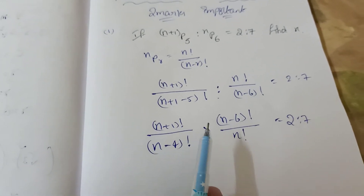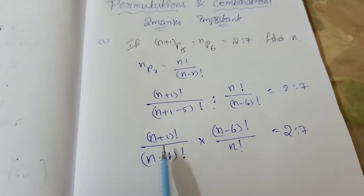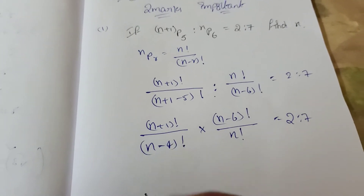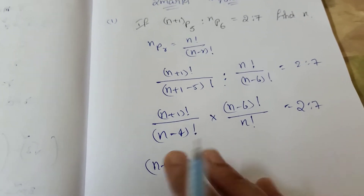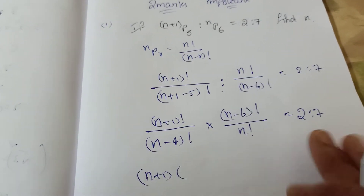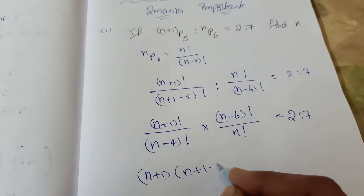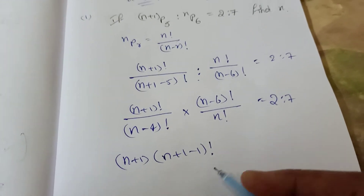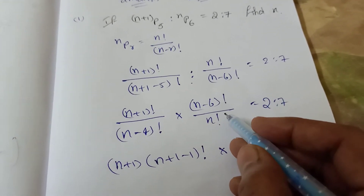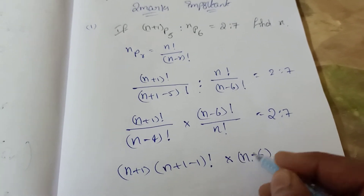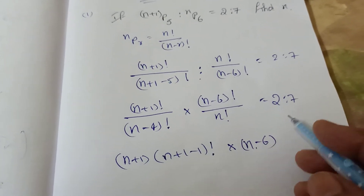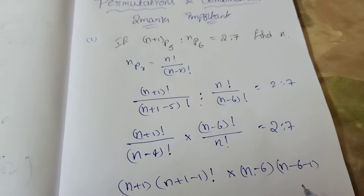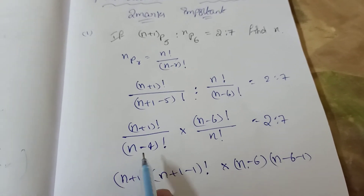Now to simplify, we need to cancel factorial terms. Write (n+1) factorial as (n+1) times n factorial — decrease the next term. Then for (n minus 6) factorial, write it out: (n minus 6) times (n minus 7)... but that is not continuous with (n minus 4), so we do not expand it that way.